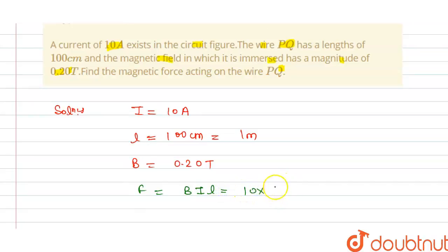This is 0.20 multiplied by 10 and multiplied by 1, so this is 2 newton.